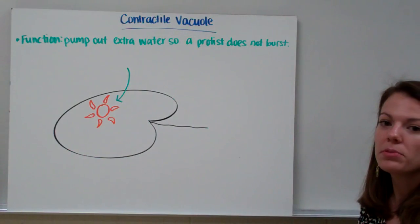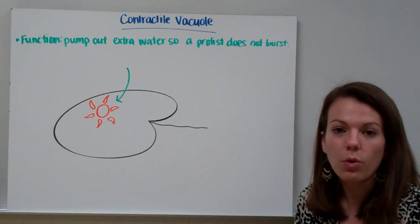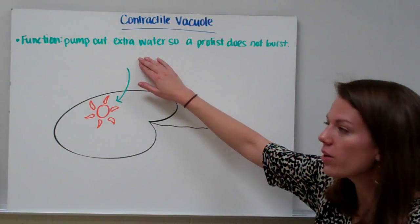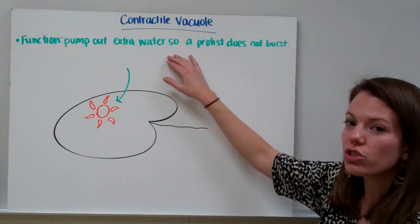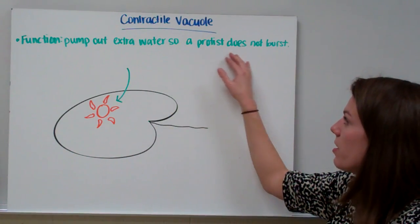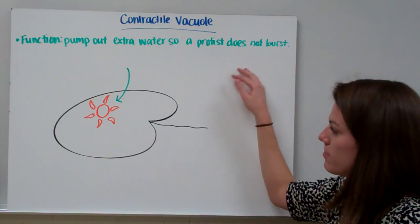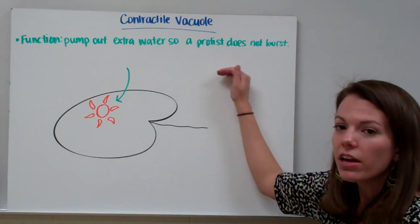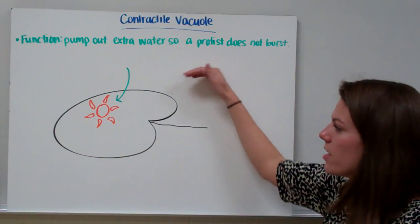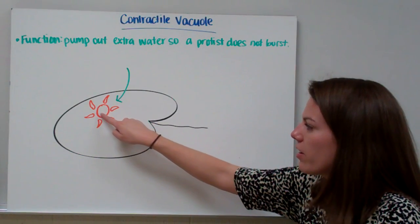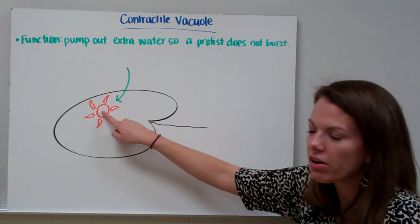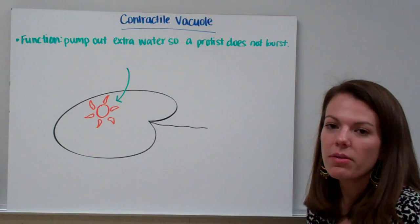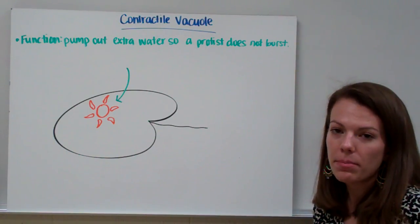A contractile vacuole helps a protist to live in aquatic or watery environments. The function of a contractile vacuole is to pump out any extra water so that a protist does not burst. Since the protist lives in an aquatic environment, water will be constantly entering a protist's cells. The contractile vacuole is kind of shaped like a sun or a star, and it pumps out this extra water so that the protist does not explode or burst.